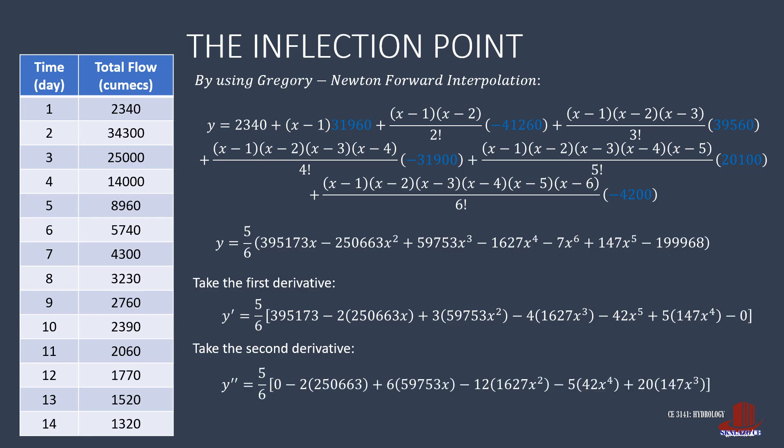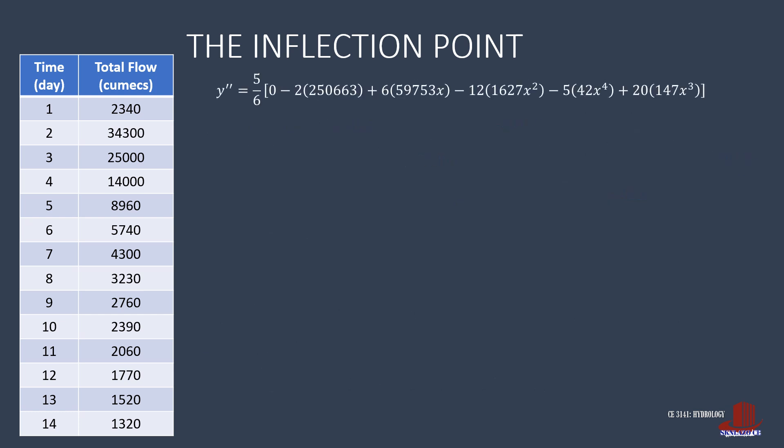Y double prime makes the function 5/6 of 0 minus 2 times of 250,663 plus 6 times of 59,753x minus 12 of 1,627x squared minus 5 times of 42x raised to 4 plus 20 times 147x cubed. After taking y double prime, have this equated to 0, which can also zero out the fraction 5/6. So, simplifying the equation, we have 0 as equated to negative 501,326 plus 358,518x minus 19,524x squared minus 210x raised to 4 plus 2940x cubed.